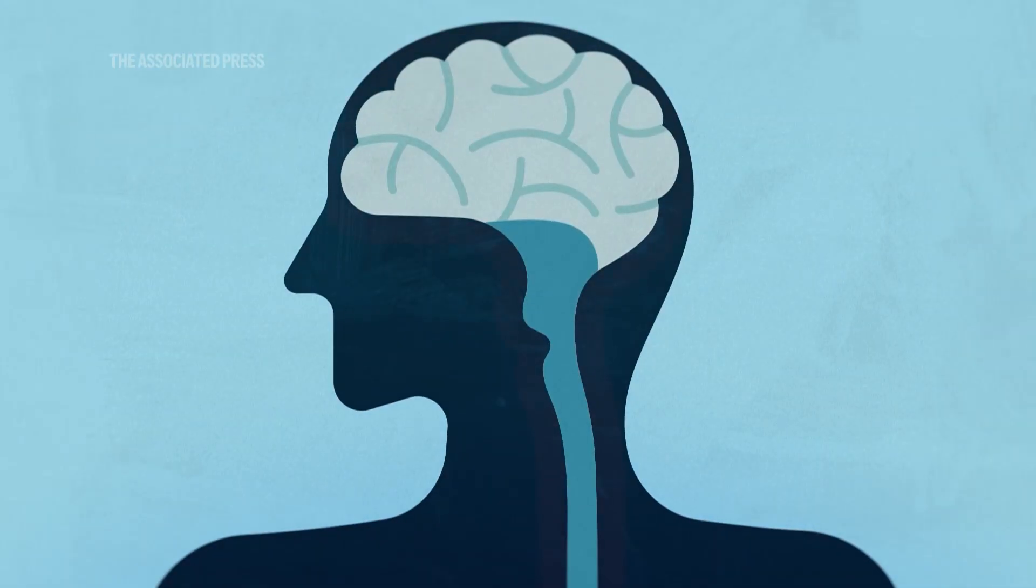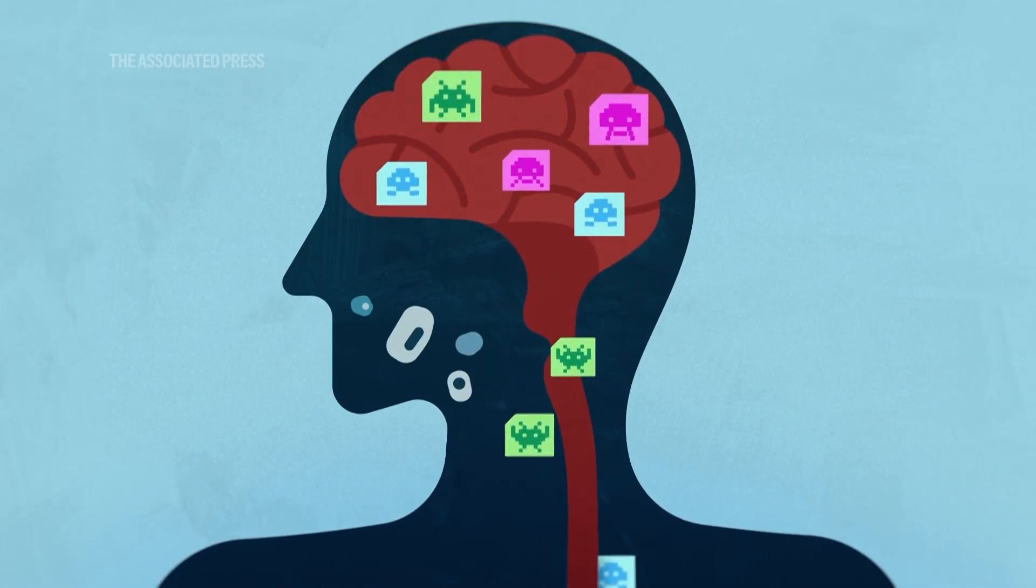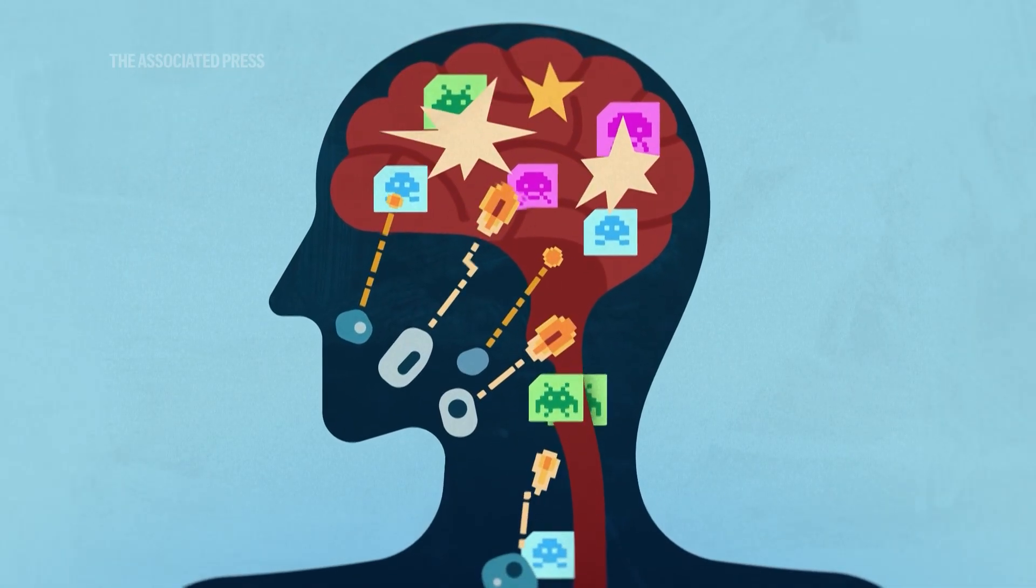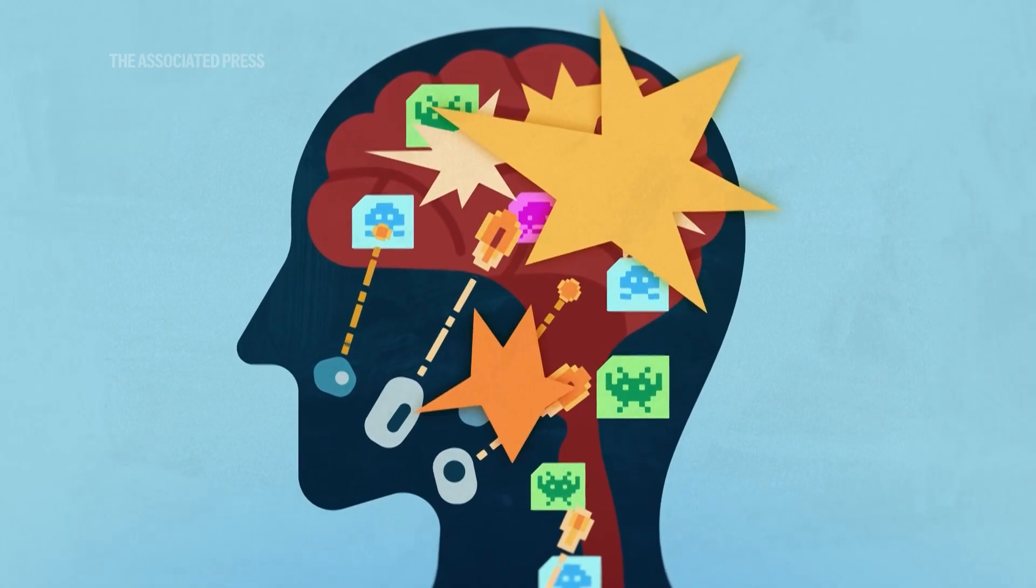Autoimmune encephalopathies occur when the body's own immune system mistakes tissue in the brain and spinal cord as foreign and attacks it by mistake.